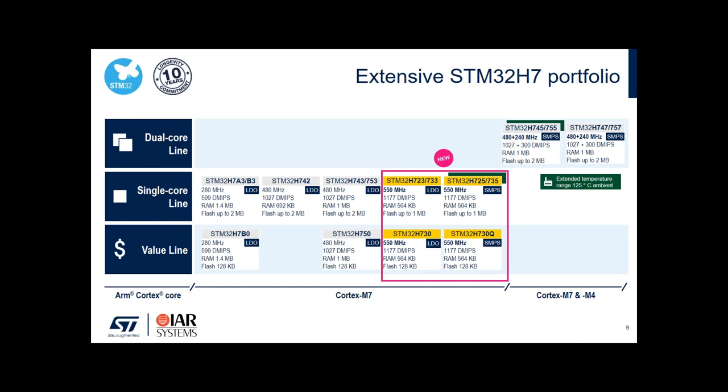Regarding the portfolio, the STM32H72X and H73X family is highlighted in the red square on screen. This product series complements the rest of the portfolio. We also have dual-core lines with the H745 and H747 series at the top, and other variants more dedicated to graphics or consumer applications.